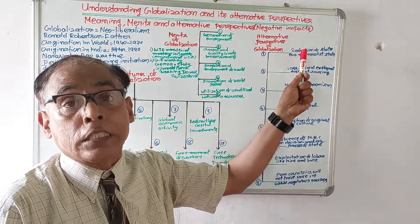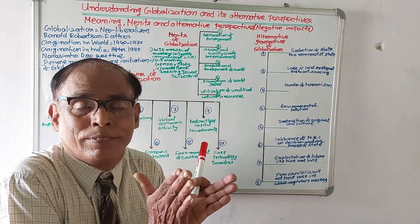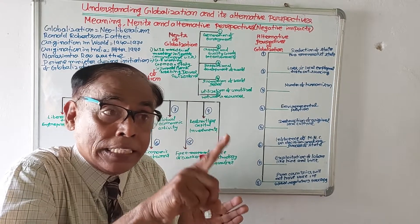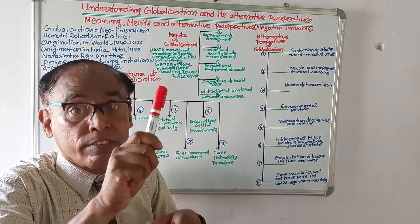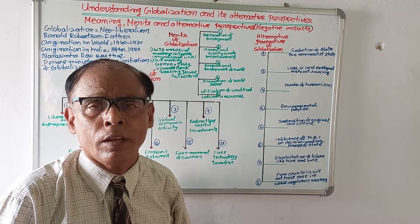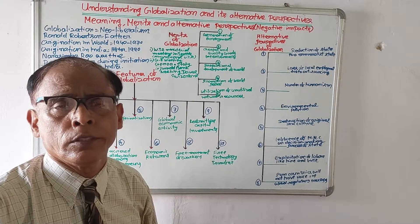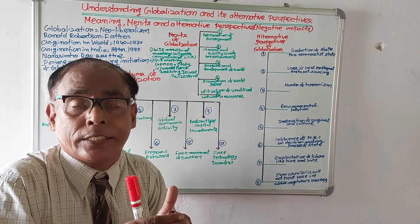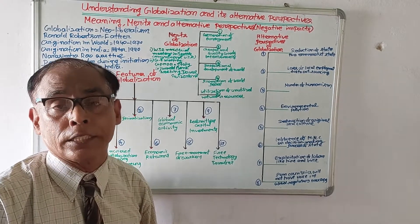So we are clear what is globalization and what are the benefits of globalization. Now we will see the alternative repercussions of globalization. No doubt globalization is good, but it has some other angles — it also has negative results, known as alternative perspectives. Globalization has some negative impacts, and as a result there were world-level movements to protest against these negative impacts.